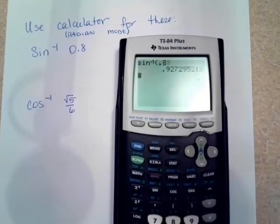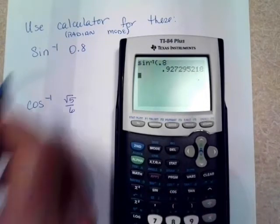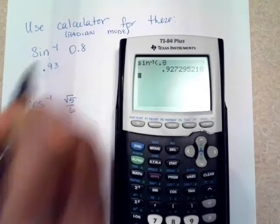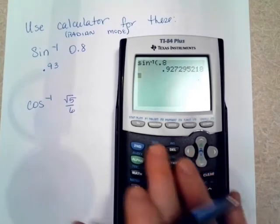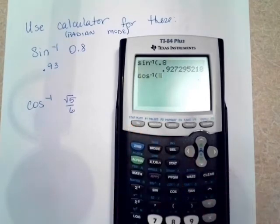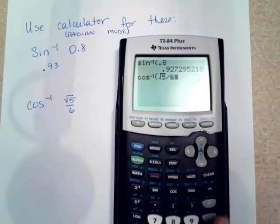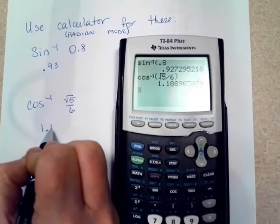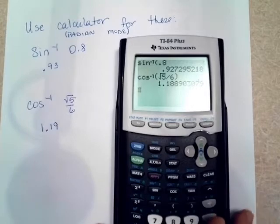And then you just put 0.8. And my answer there is 0.93. I think it said round to two places. And then the next one says the cosine of square root of 5. Notice I bumped over so that my division sign would not be out of my radical. And when you round that one, it's 1.19. So use the calculator to help you on those.